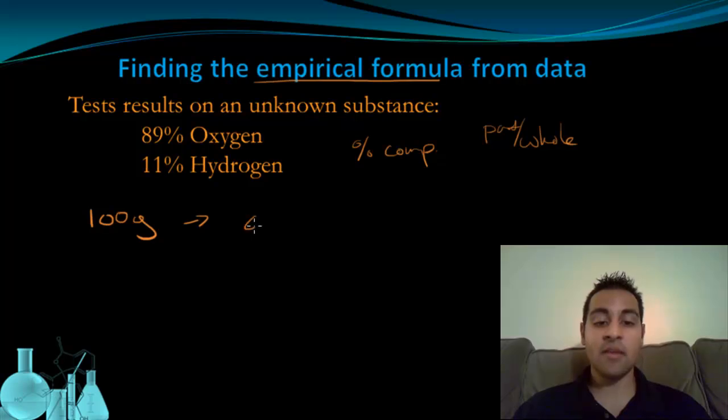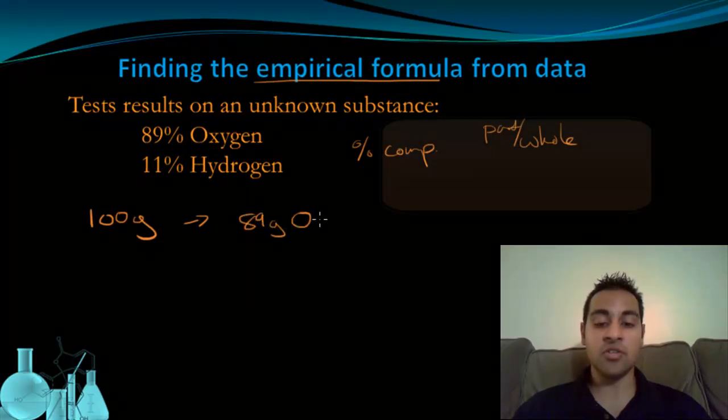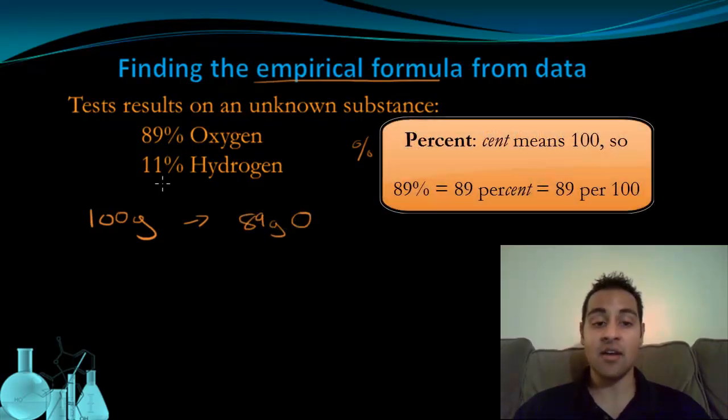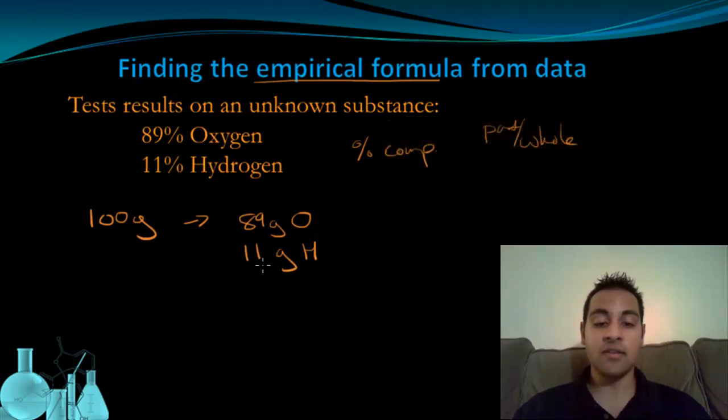This automatically makes it 89 grams of oxygen, because 89% of 100 is 89, and 11 grams of hydrogen, because 11% of 100 is 11. This is good because it gives me masses to work with.